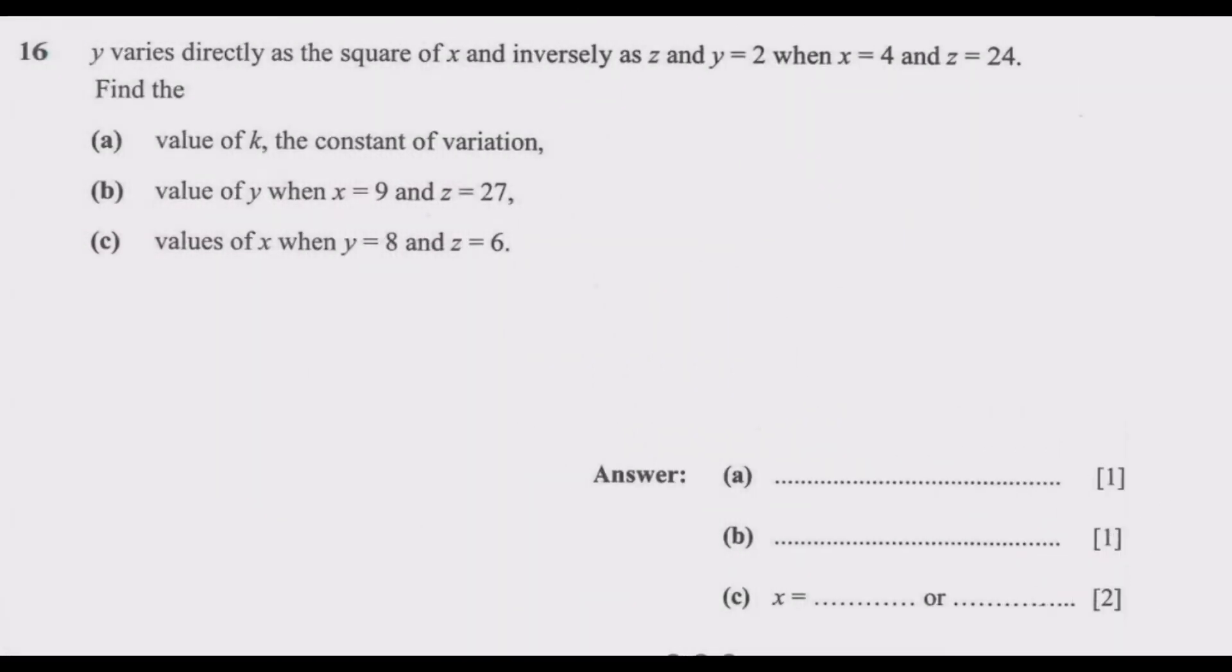Question 16: Y varies directly as the square of X and inversely as Z, and Y equals 2 when X equals 4 and Z equals 24. Find question A, value of K, the constant of variation.